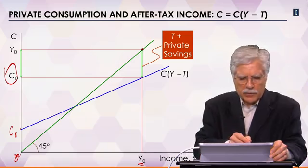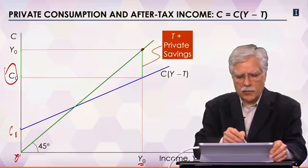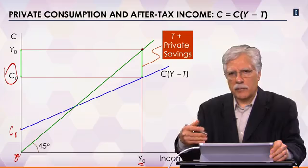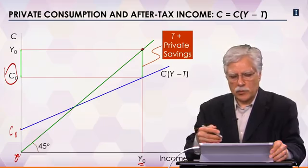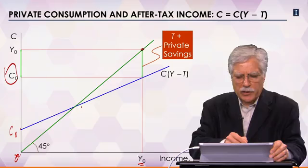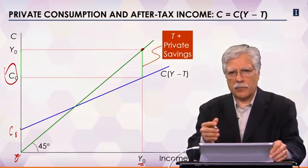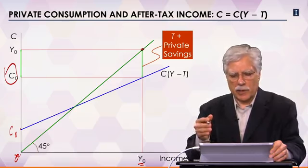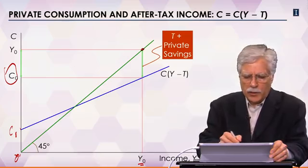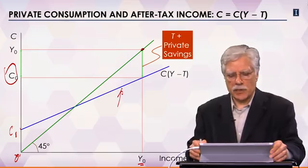Back to the feature that the consumption function is flatter than the 45-degree line. What it really says is that for every dollar we earn, we spend part of it and save part of it. If we spent every dollar, the consumption function would be parallel to the 45-degree line. But since people save a portion of their income, the consumption function is flatter than the 45-degree line. The slope of the consumption function represents the marginal propensity to consume.